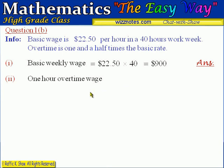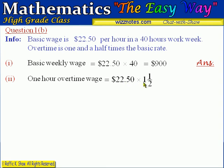Part 2 of question 1B asks what is the wage for one hour of overtime work. That is the basic hourly rate of $22.50 multiplied by the time and a half rate, which is 1.5. That calculation gives us $33.75, so the overtime wage for one hour of work is $33.75.